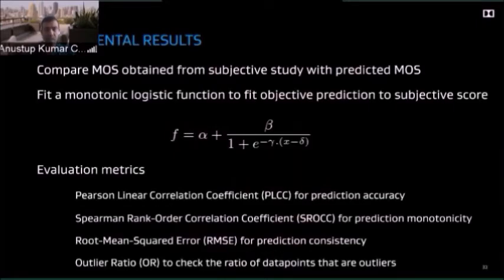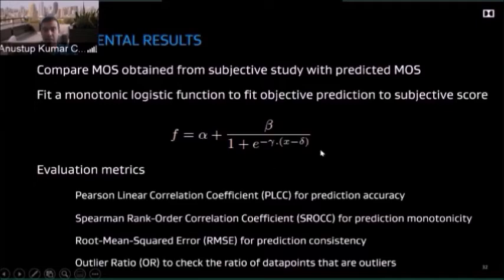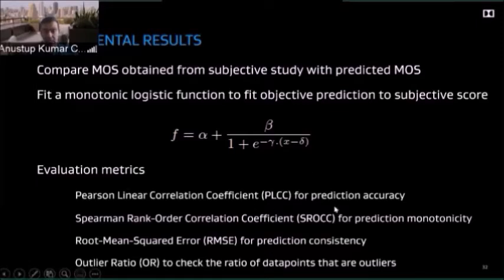To evaluate, we compare the mean opinion score from subjective study with the predicted MOS using these techniques. We then fit a monotonic logistic function to map the objective prediction to subjective scores — a standard technique in the quality assessment community that accounts for complex cognitive effects, anchors details of the subjective experiment design, and memory effects. Four parameters — alpha, beta, gamma, and delta — are optimized to get the best predicted curve. We evaluate using four criteria: PLCC, SROCC, RMSE, and outlier ratio (OR), which measures the proportion of outlier data points.